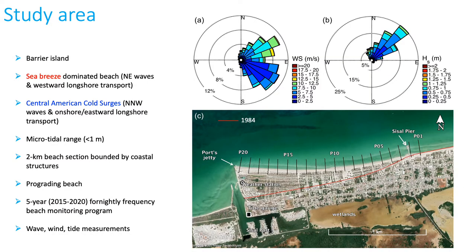The study area is located on a barrier island in the northern Yucatan Peninsula. Wind and wave climate are mainly dominated by local sea breezes that are more intense during the spring months. Central American cold surge events occur during the fall and winter and are responsible for more energetic wave conditions. A micro-tidal regime with tidal range of less than one meter characterizes this area. The study site is bounded by coastal structures that play an important role in beach morphodynamics. Significant beach accretion has occurred during the past 30 years due to the construction of the port. The Yucatan coast presents dunes with heights between 1.5 and 4 meters.